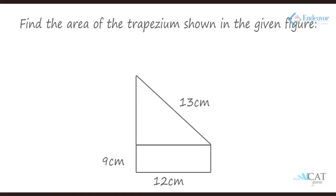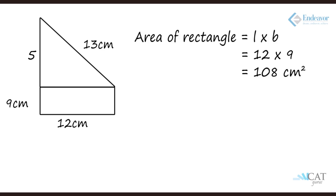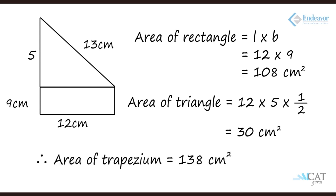Now let us find the area of a trapezium shown in the given figure. Looking at the figure, it is broken into two parts: the bottom is a rectangle of 9 by 12, and the top is a triangle with a 13 cm hypotenuse and a 12 cm base. We don't know the height, but using Pythagorean triads, 5-12-13 gives us a height of 5. The rectangle area is 12 by 9 which is 108 square centimeters, and the triangle area is 12 by 5 by half, giving 30. The total is 138 square centimeters.